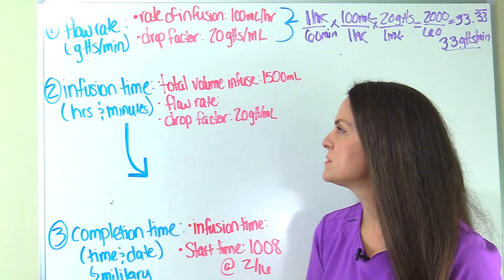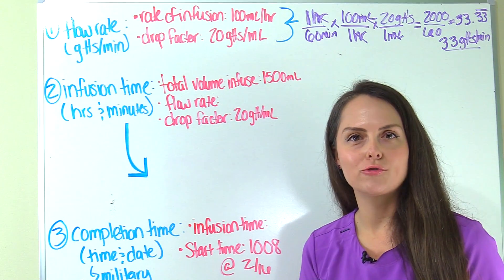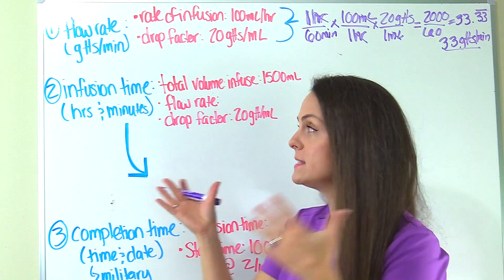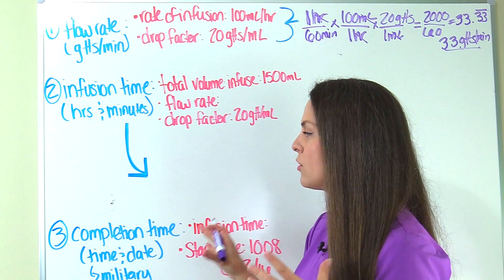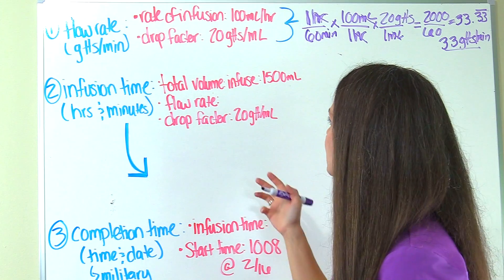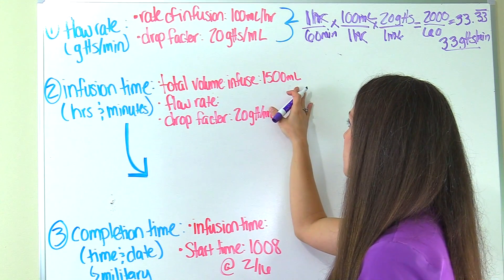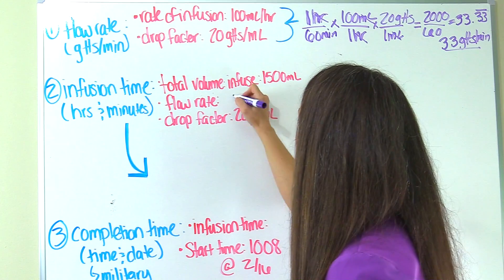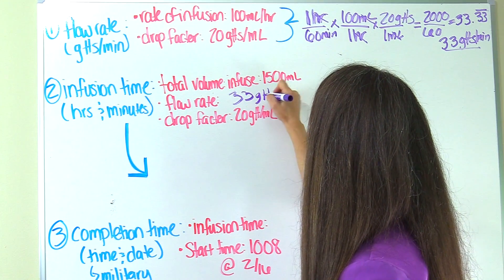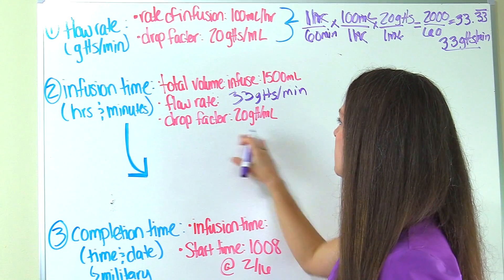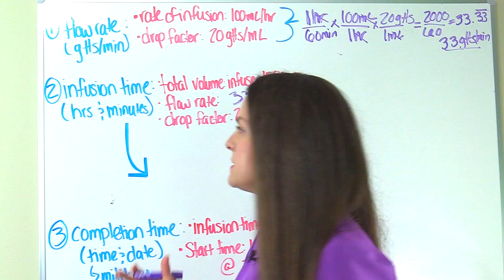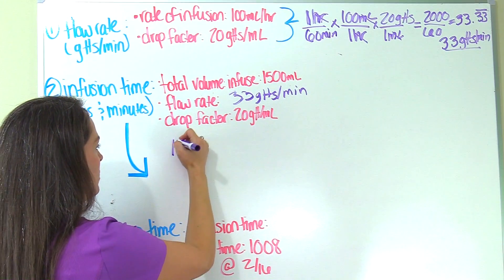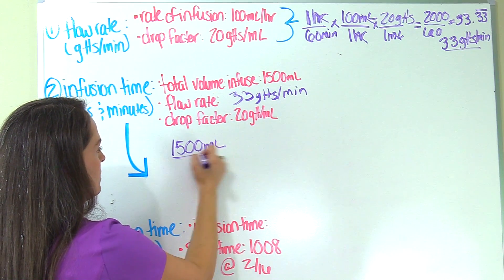Now let's solve for infusion time. We want our answer to be in hours and minutes — that's our goal. Sometimes this answer will just be in hours because everything divides out evenly, but a lot of times you have leftover minutes, which you need for a correct completion time. To solve for this, we need to know three things: the total volume to infuse (1500 milliliters), our flow rate (33 drops per minute), and the drop factor (20 drops per mL). I'm going to start with the total volume: 1500 mLs, one dose.